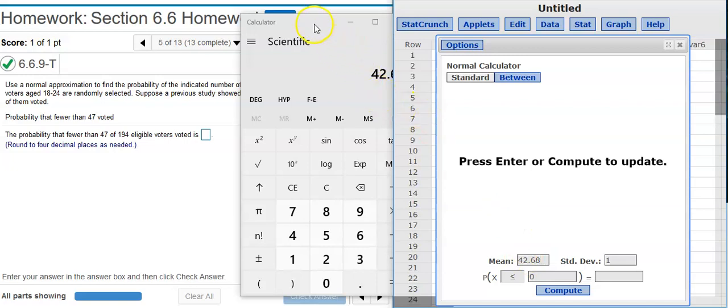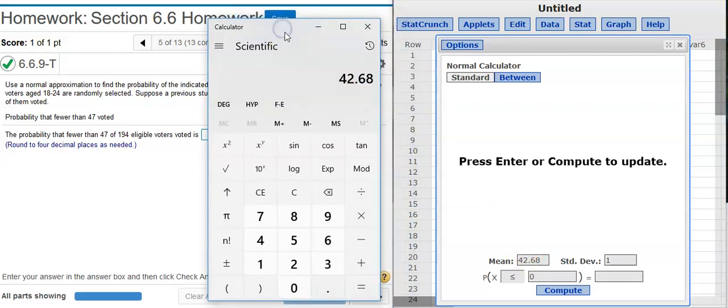The standard deviation is the square root of NPQ. So here I've got NP. So if I multiply that by Q, which is going to be the complement of P,